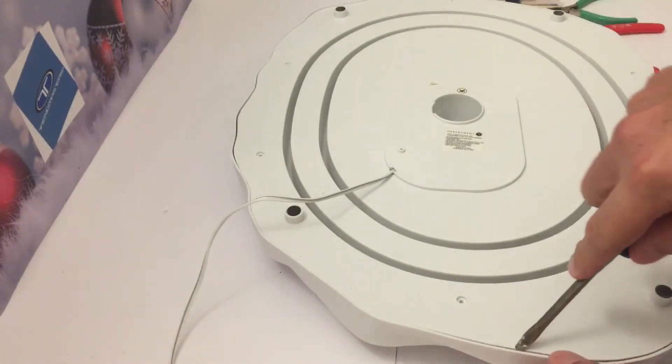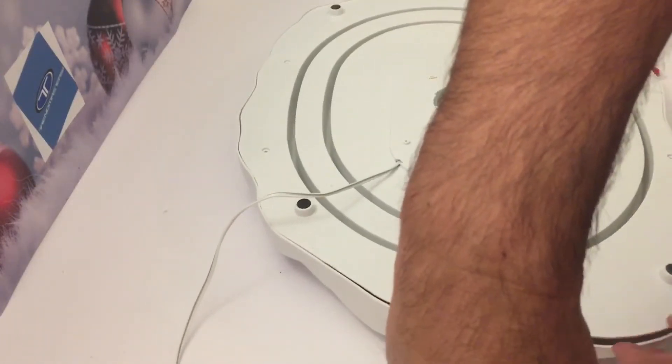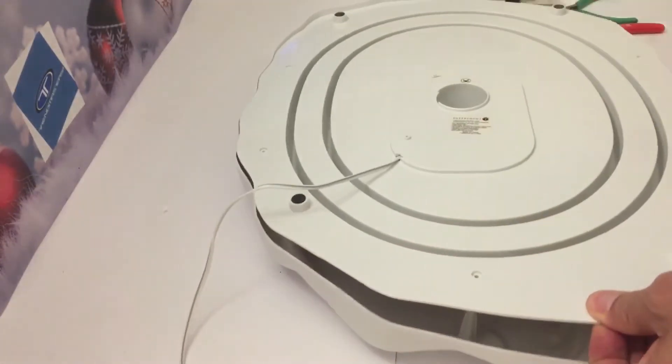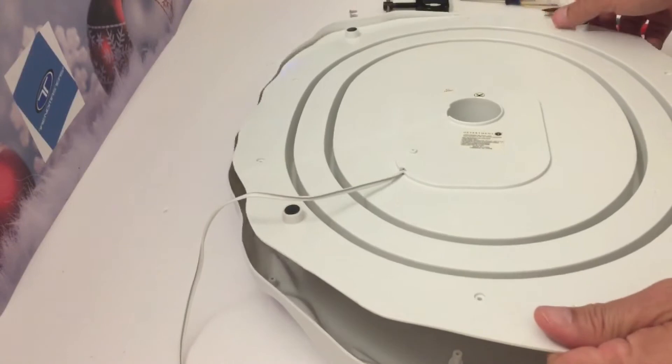Screws removed. Take a flathead screwdriver and pry the bottom loose from the top. The bottom should pop off.